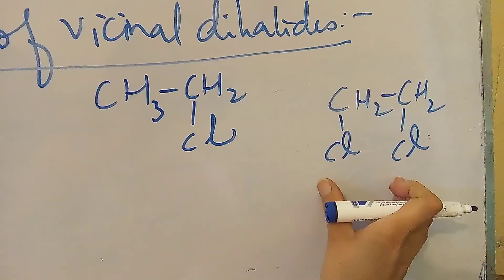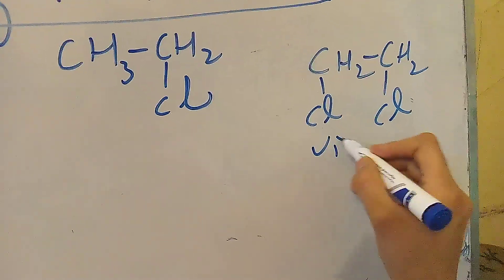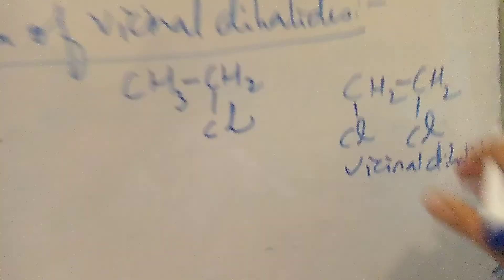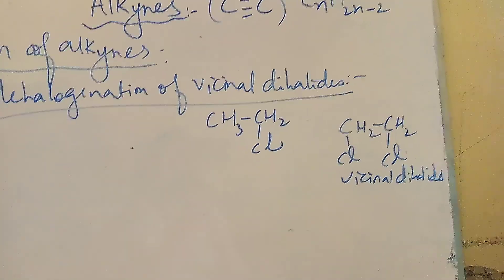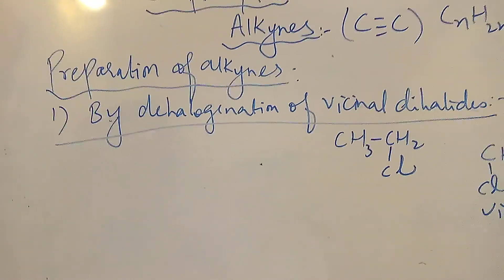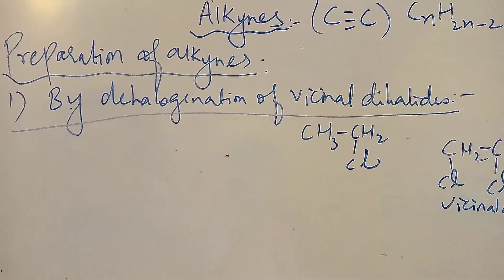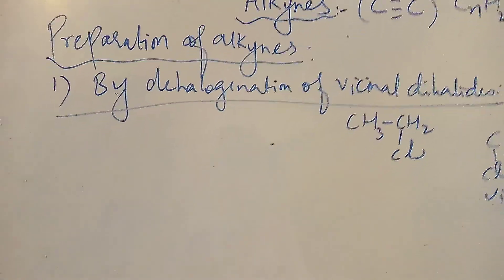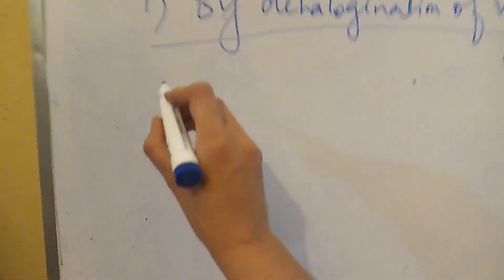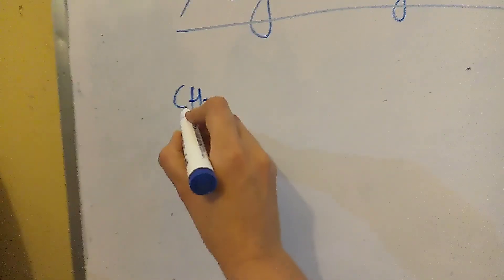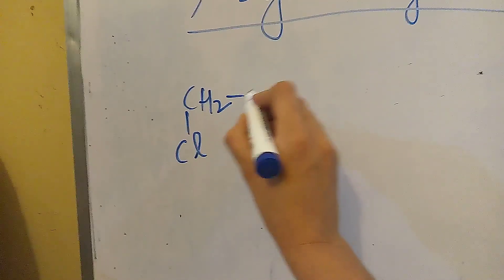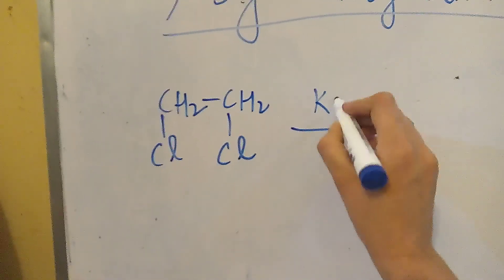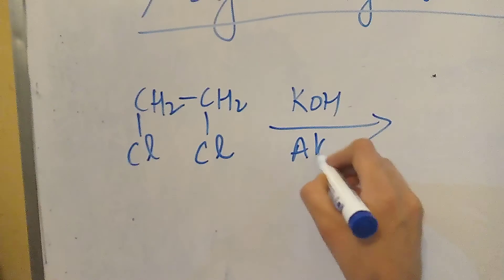This type of alkyl halide is called a vicinal dihalide. Vicinal dihalides are those which contain two halogen atoms on adjacent carbon atoms. In the preparation of alkynes, we will use vicinal dihalides. The dehydrohalogenation conditions are the same as those used in preparation of alkenes from alkyl halides — it is carried out in the presence of potassium hydroxide and alcohol.